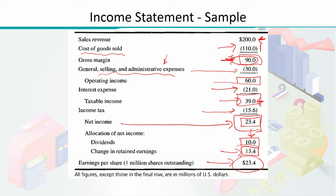The decision on how much of net income to retain and how much to distribute as dividends is at the discretion of the board of governors or the managers. This is how an income statement looks and these are its various components. The income statement tells us the net income over one year after subtracting all expenses and taxes — showing the company made a profit of 23.4 million dollars. However, for a complete picture, the other two financial statements must also be considered.